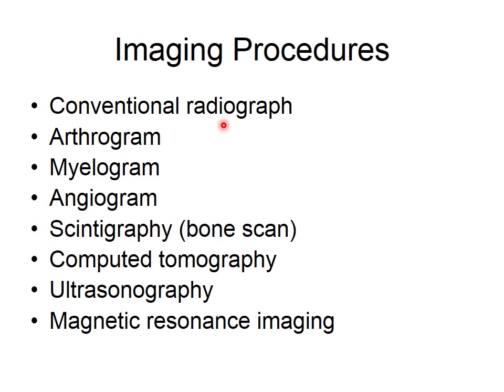Then we have an arthrogram, which is specific for a joint — arthro meaning joint. A lot of times they will inject the joint. These can be done radiographically or with other imaging techniques like MRI or CT, and it gives you a better view of the joint. A myelogram involves viewing muscle tissue more specifically. These are all special types of primary radiographs.